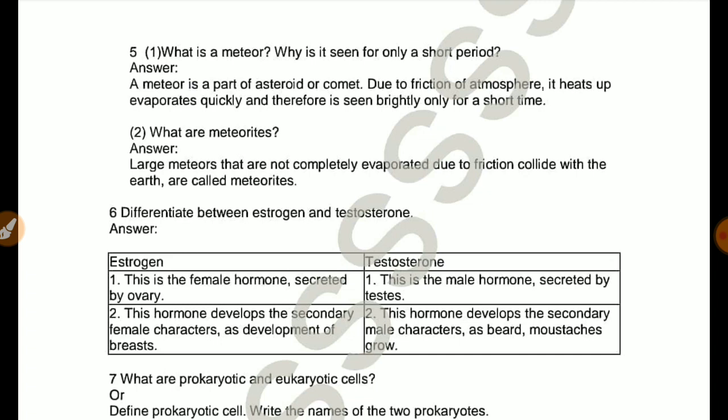Differentiate between estrogen and testosterone. Estrogen is female hormone secreted by ovary. Testosterone is male hormone secreted by testes. Estrogen develops secondary female characteristics as development of breasts. Testosterone develops secondary male characteristics as beard and mustaches.